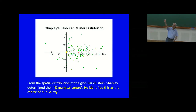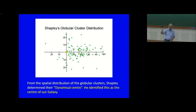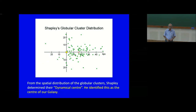Quite by accident, Harlow Shapley picked the kind of objects which are not affected by dust. Therefore, his discovery was not erroneous due to the absence of knowledge about dust in our galaxy.